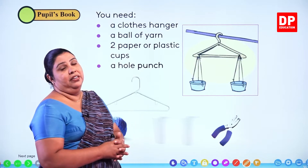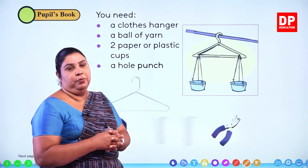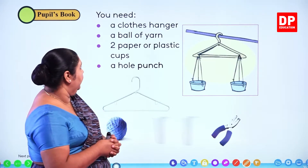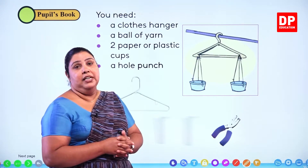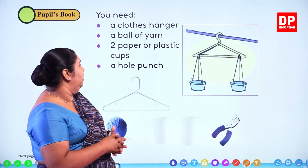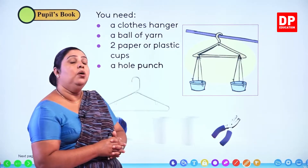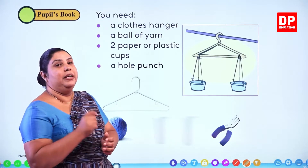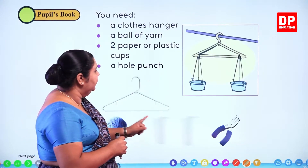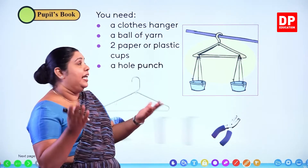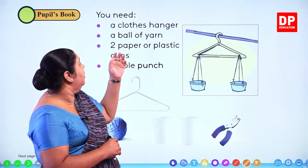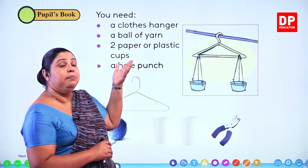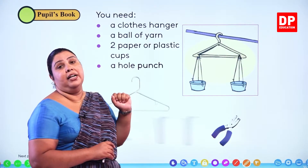A ball of yarn — we can use a type of string, wool or similar yarn. Two paper or plastic cups — we will use two paper cups or plastic cups. A hole punch — a hole punch is what we use to make holes so we can punch through the material. So these are the things you will need: a clothes hanger, a ball of yarn, two paper or plastic cups, and a hole punch.